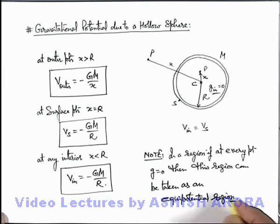Because if in any region g is zero, then there will never be any potential difference between two points of this region, so all points will be at same potential. As we already discussed, potential difference VB minus VA between two points can be written as negative of integral of g dot dx.